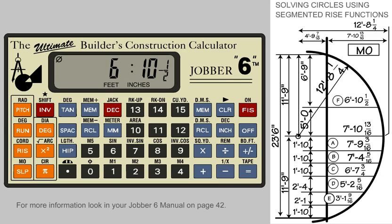As you can see, once you get the sequence of entries in mind, the solution for various segmental rise dimensions is very fast and easy. See the Jobber 6 user's manual for additional illustrations and information on using the circle function.